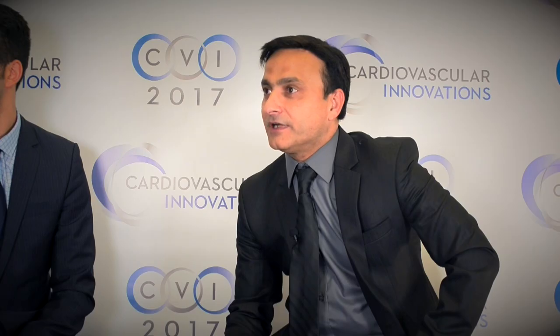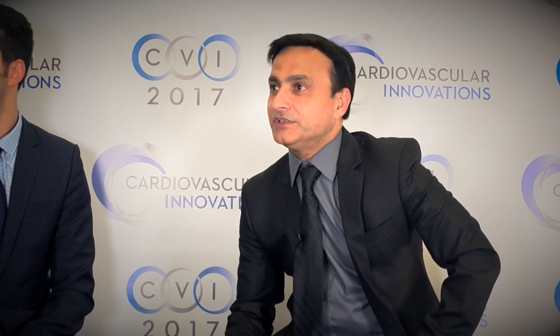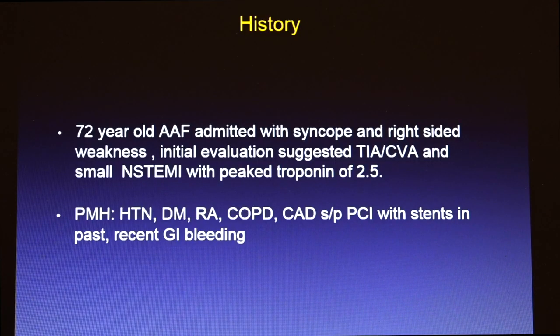Unfortunately, she was admitted about five or six months ago with a stroke. She is a 72-year-old female admitted to the Medical Center Arlington Hospital with syncope and right-sided weakness. The neurology evaluation suggested she has a TIA or a small stroke, along with an elevated troponin of 2.5. Her past medical history includes hypertension, diabetes mellitus, rheumatoid arthritis, COPD, prior stents to the right coronary artery, and a history of GI bleed about three or four months prior to this event.